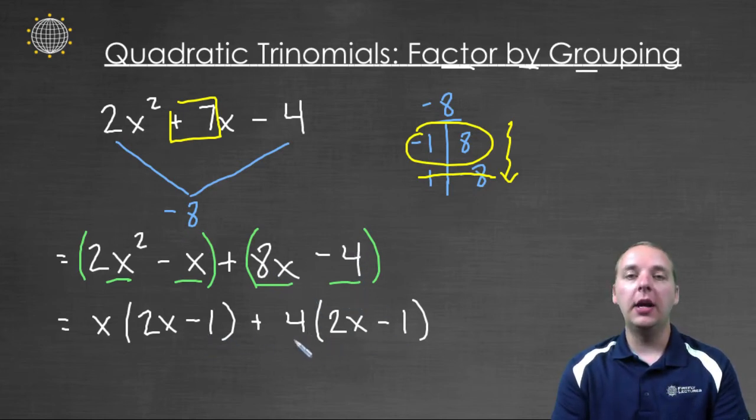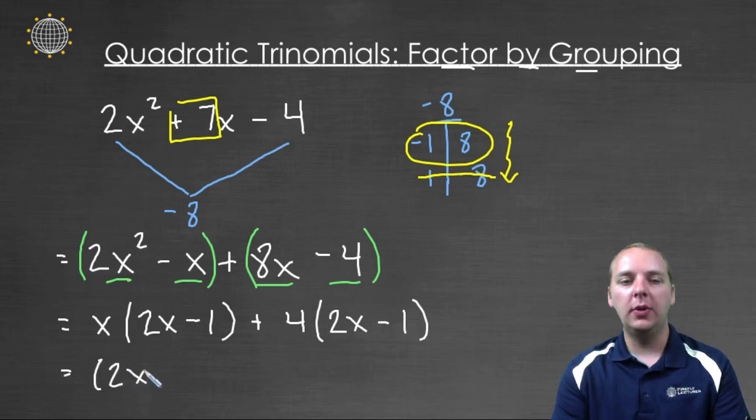And then I'm going to look for a common binomial factor that I have in each of these groups here. This is not factored currently, we're not done, but I do see both of these have a common factor of 2x - 1. So I'm going to pull that out, that 2x - 1. And then left over I would have an x + 4, and this polynomial is now factored.